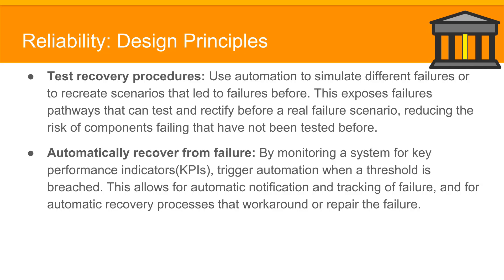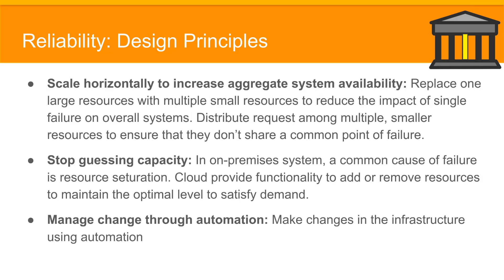Automatically recover from failure by monitoring a system for key performance indicators (KPIs). You can trigger automation when a threshold is breached, enabling automatic notification, tracking of failures, and automatic recovery processes that work around or repair the failure. You can also scale horizontally to increase aggregate system availability by replacing one large resource with multiple smaller resources to reduce the impact of a single failure on the overall system.